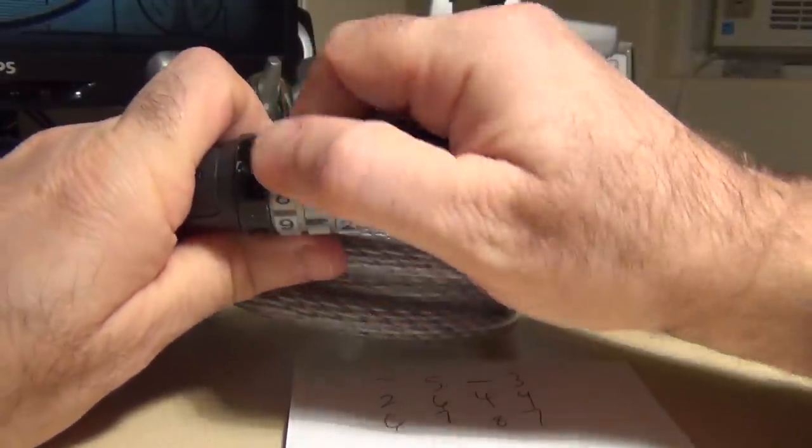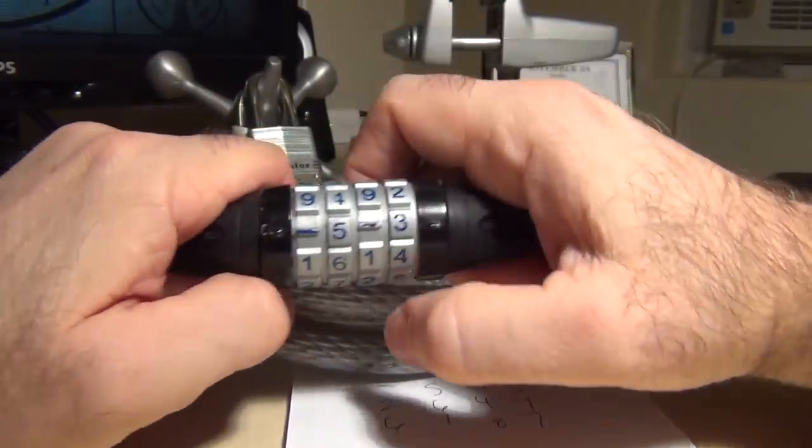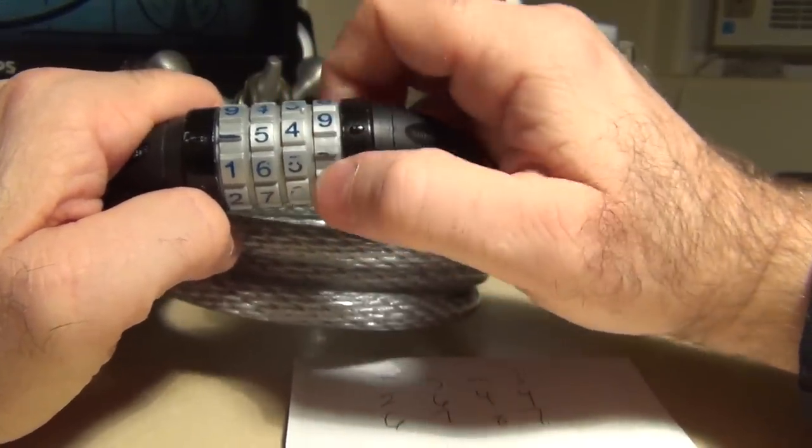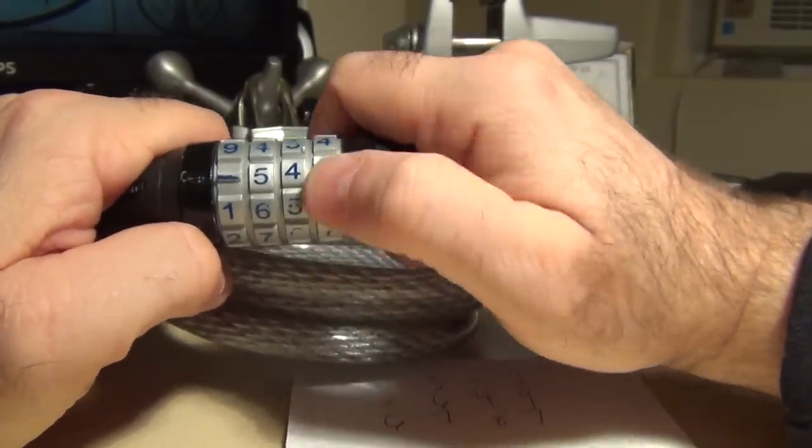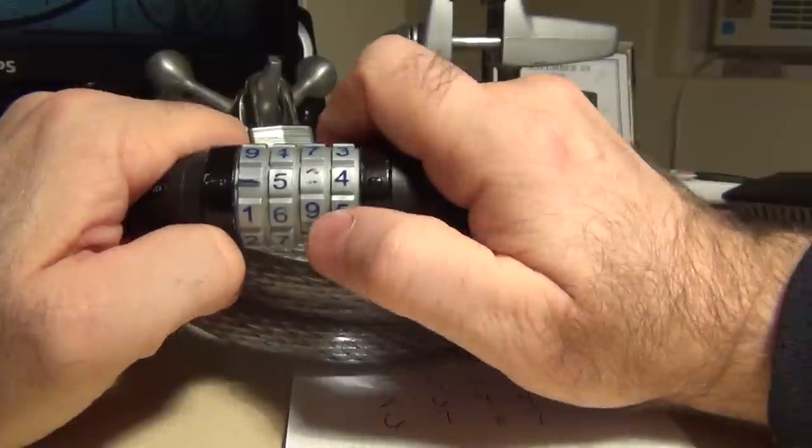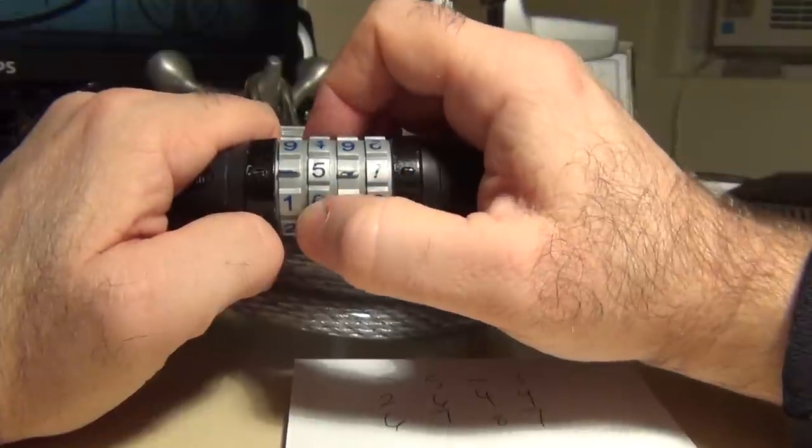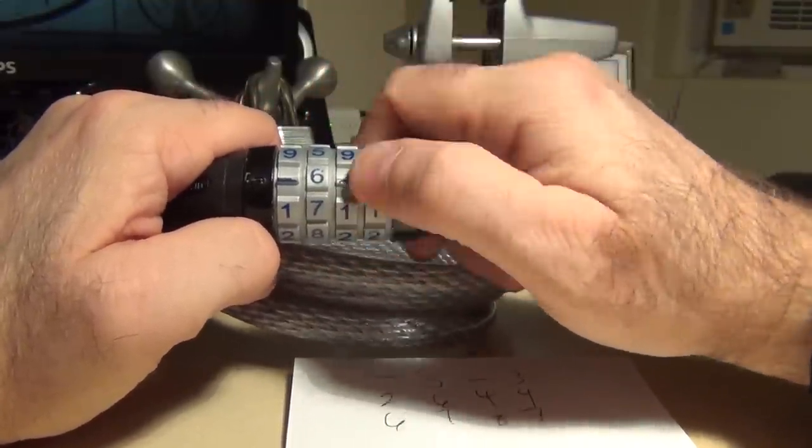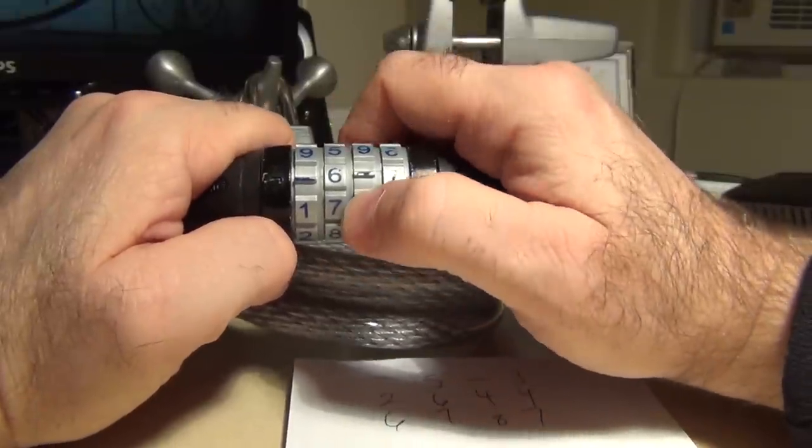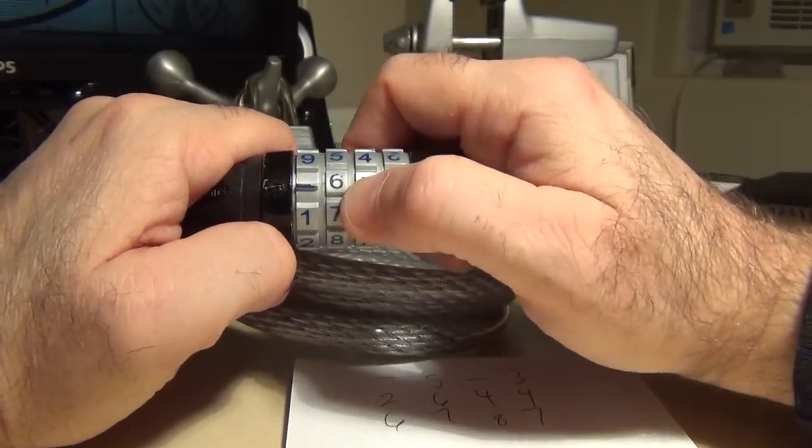So we'll set it to the first possible combination. All right, we just pull, nothing. So we've got four seven, nothing. Turn this to four, three, nothing, nothing, nothing, nothing. Turn this to eight, nothing, nothing, nothing. Turn this to six, dash and three, nothing, nothing, nothing.